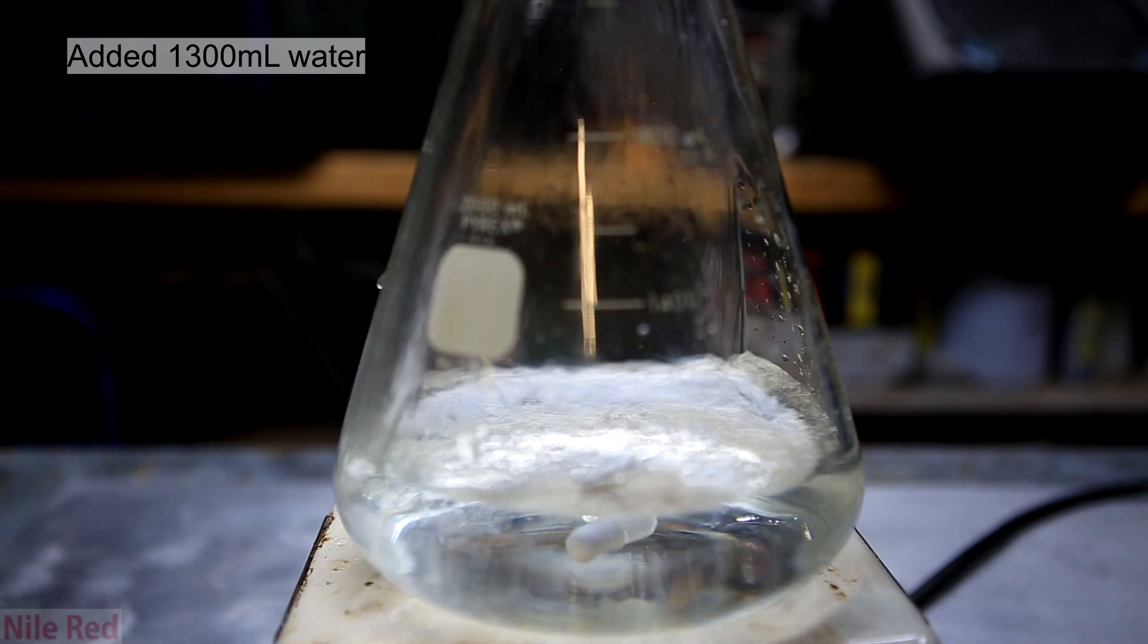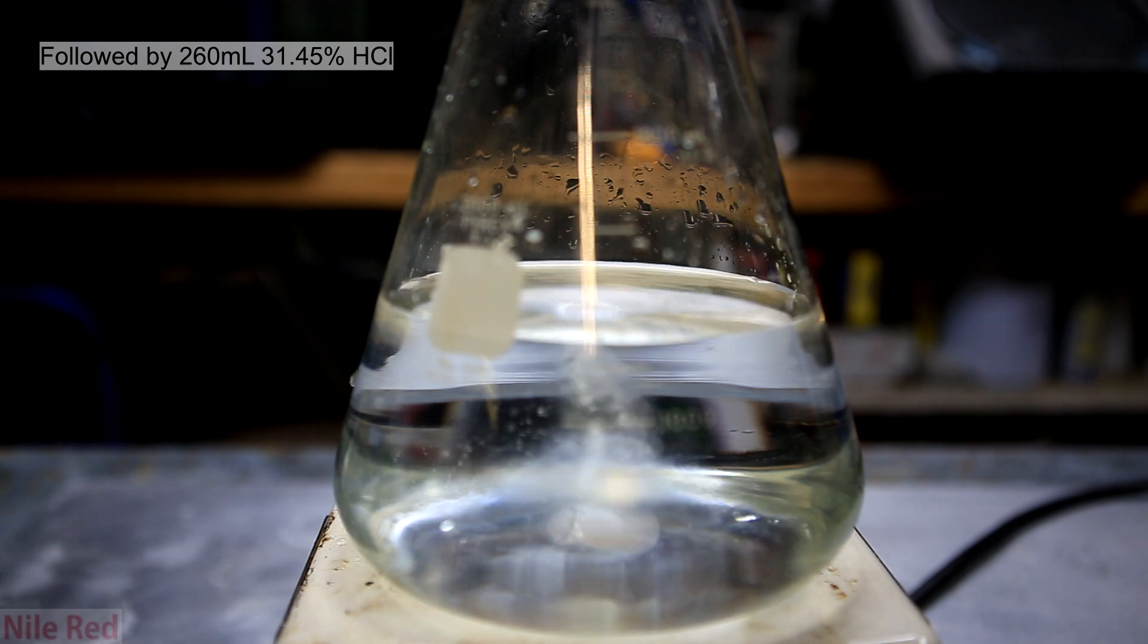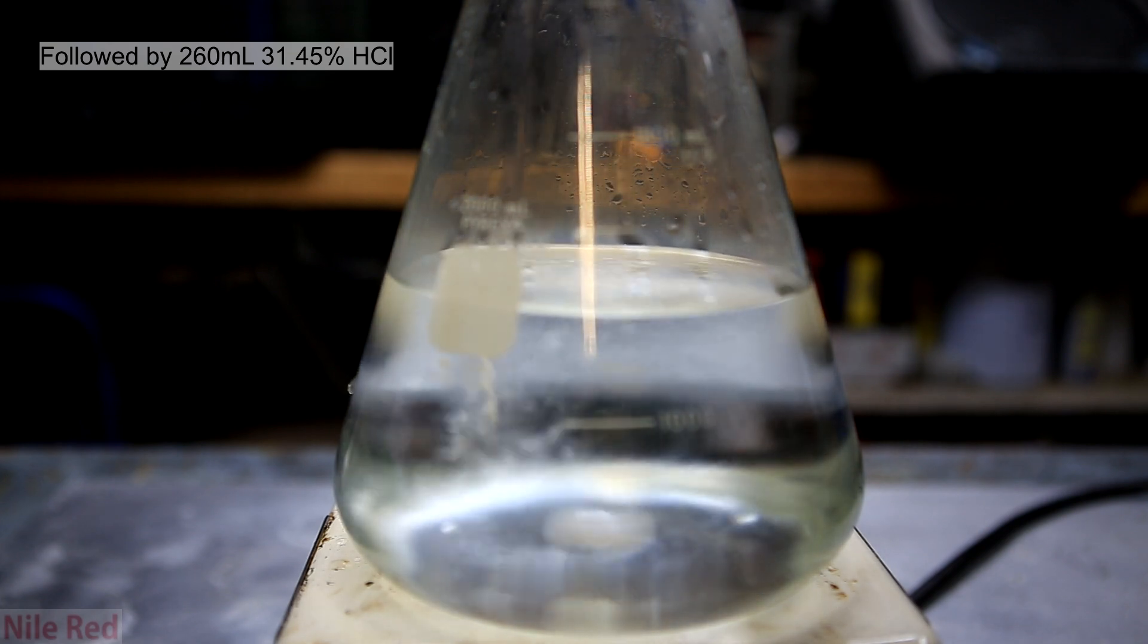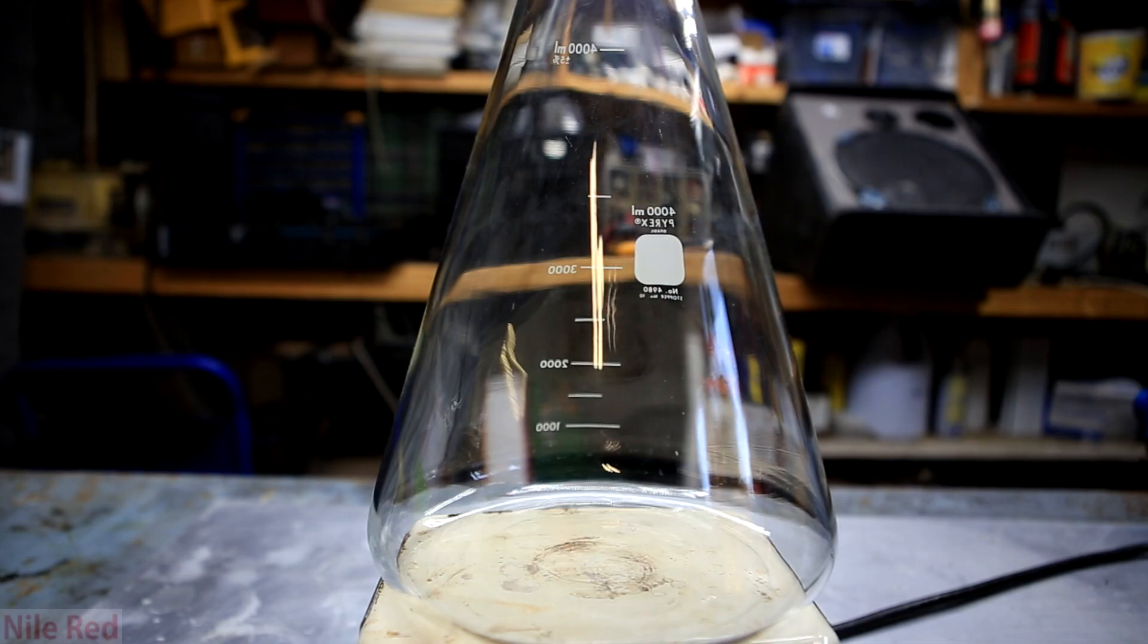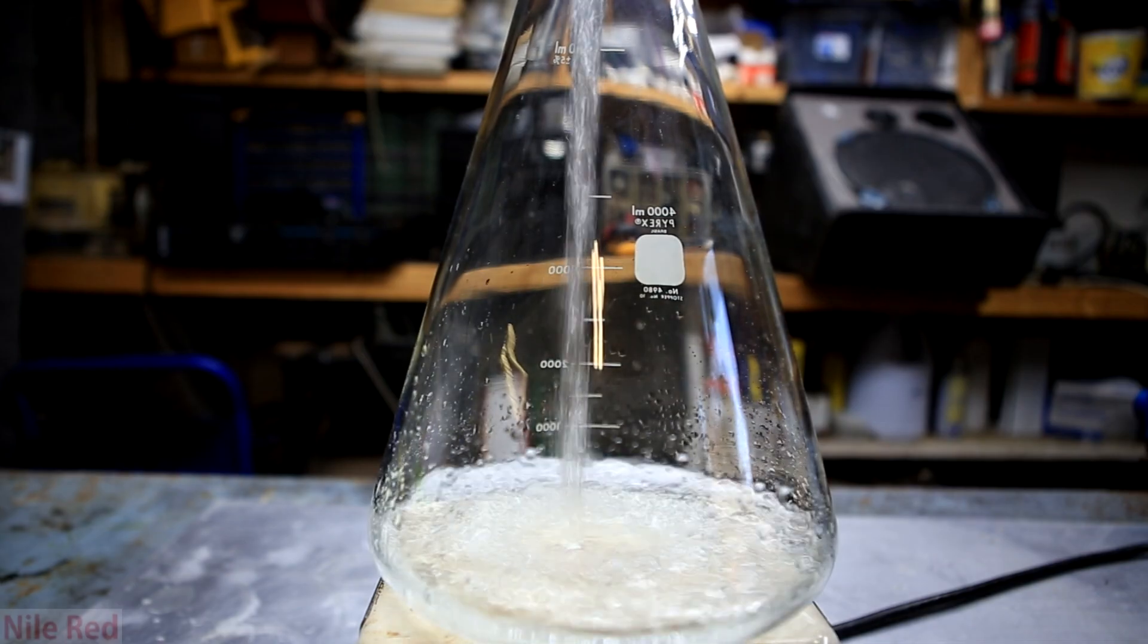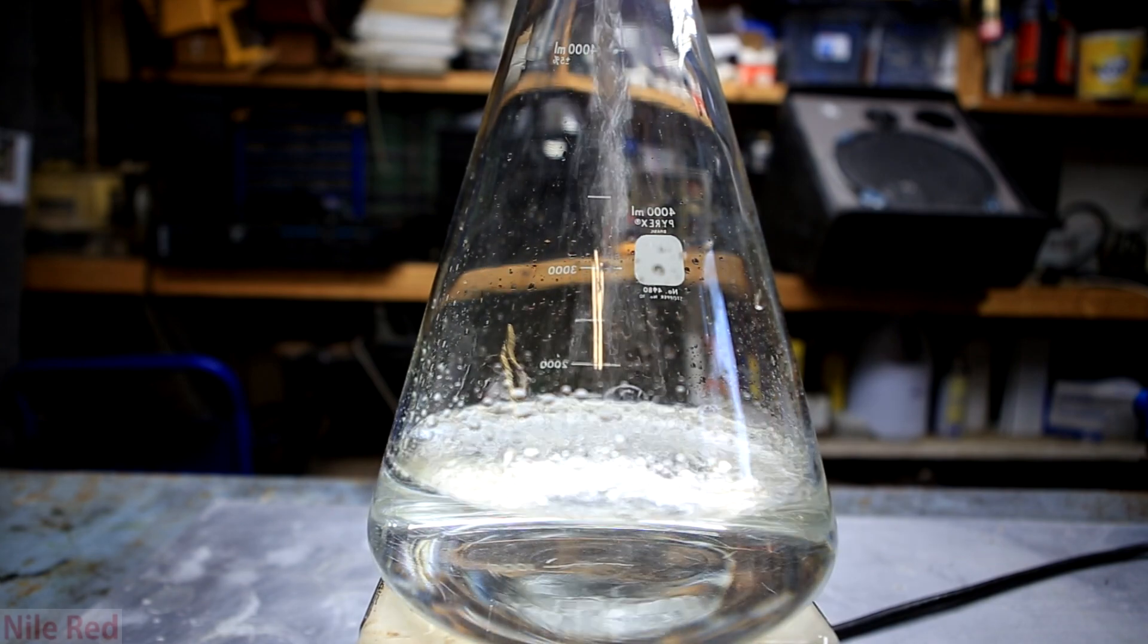To a suitable container was added 1300 milliliters of distilled water. This was followed by the addition of 260 milliliters of 31.45% hydrochloric acid. Because foaming in this experiment can be an issue, I opted to transfer it to a larger 4 liter Erlenmeyer flask.